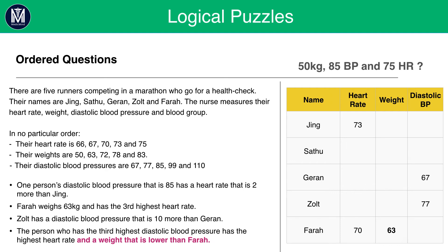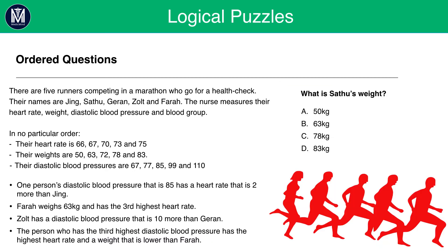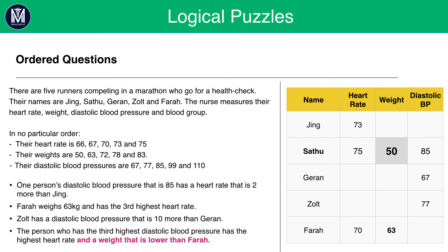The only person we do not have information for — blood pressure, weight and heart rate — is Satu. Farah, Zolt, Jiran and Jing cannot fit these three categories of having 50 kilograms, blood pressure of 85 and heart rate of 75. That must mean these values are representative of Satu. We can therefore put these in, and this shows that Satu has a weight of 50 kilograms. That is the value we are trying to work out, and the answer to this question is A.